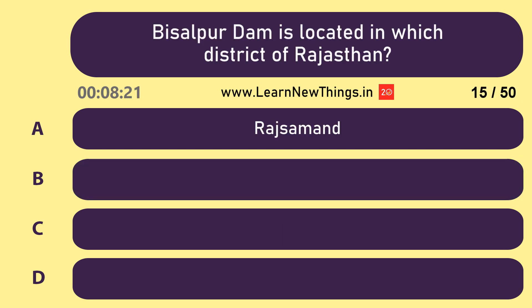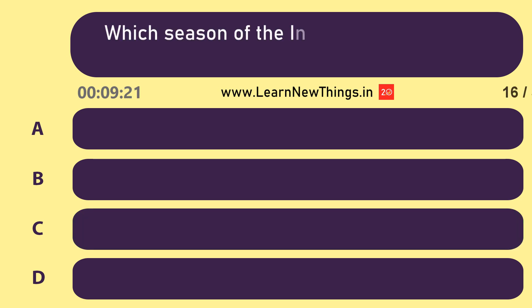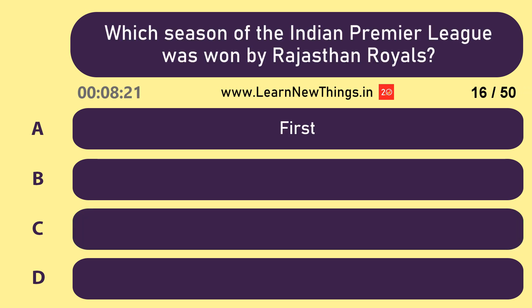Bisalpur Dam is located in which district of Rajasthan? Tonk. Which season of the Indian Premier League was won by Rajasthan Royals? The first.